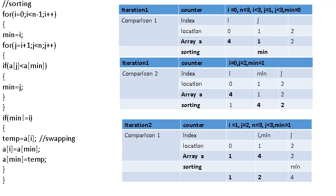Inside the loop, if a[j] is less than a[minimum]: a[j] is a[1] with value 1, and a[minimum] is a[0] with value 4. Since 1 is less than 4, condition is true. The new minimum element is 1, so minimum is set equal to j. Minimum now equals 1, pointing to location 1. Control comes back, j is incremented to 2. 2 is less than 3, so the loop continues.